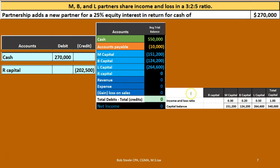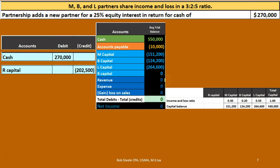On our worksheet we have the 30/20/50 profit-sharing ratio — the 3-to-5 ratio — and the capital account balances for the three existing partners. Note the capital account balance of $540,000 equals the book value of the company: assets minus liabilities equals $540,000. That's allocated to the partners, and we can do this because we've closed out revenues and expenses — so this is a post-closing trial balance with balance sheet accounts.